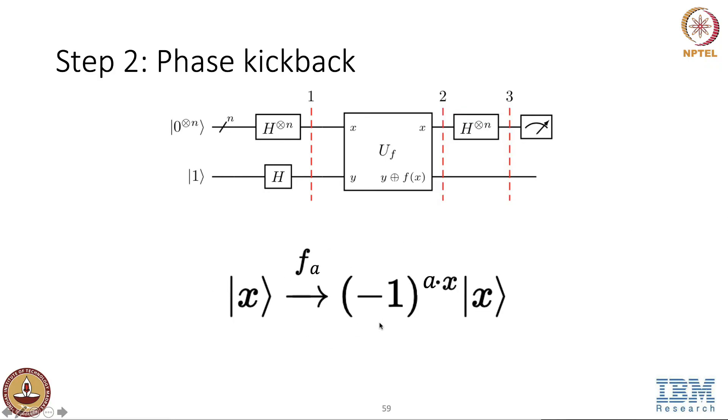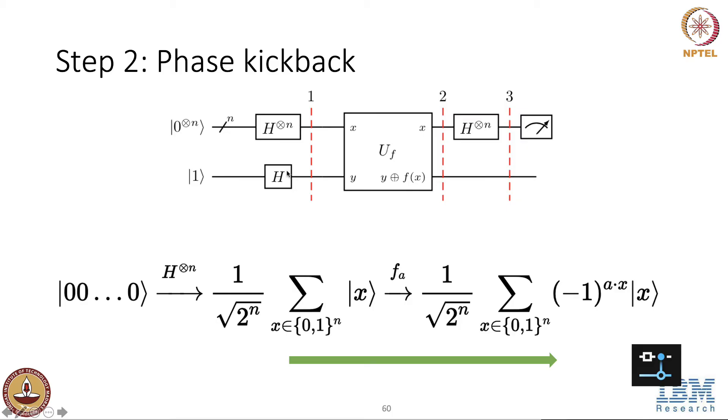And then we apply the oracle. We saw earlier that when we apply the oracle, it's same as having this phase that comes out minus 1 to the f of x. But we know that f of x is a dot x. So x, when we apply the state x and minus, when we give it to the oracle, the output will be minus 1 to the a dot x x and a minus.